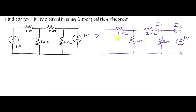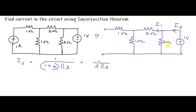Looking at the resistance from this side: the 1 ohm is open-circuited, so this 1 ohm is in series with the 2 ohm, and this series combination of 1+2 ohm is in parallel with the 3 ohm. So Is = 1 / (1 + 2 parallel with 3). That gives 1 / (3 parallel with 3), which equals 1 / 1.5 ampere.